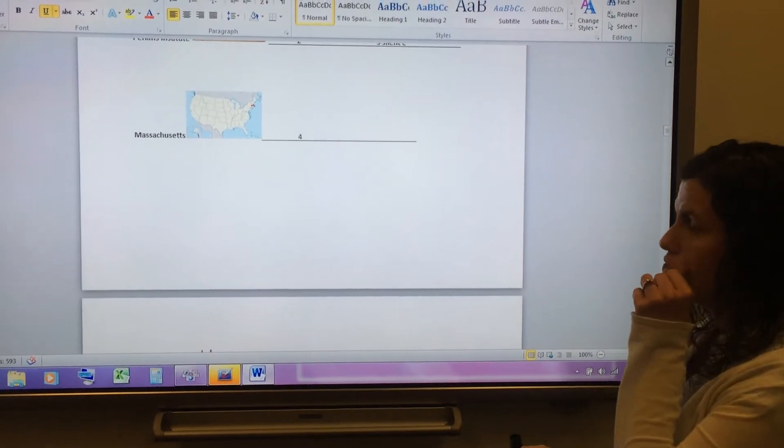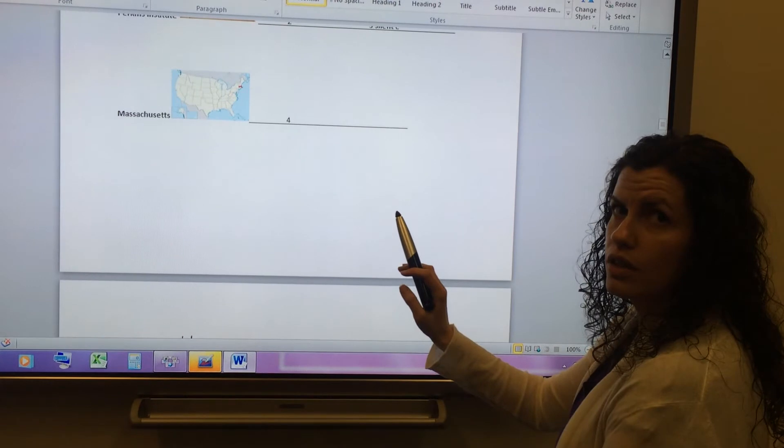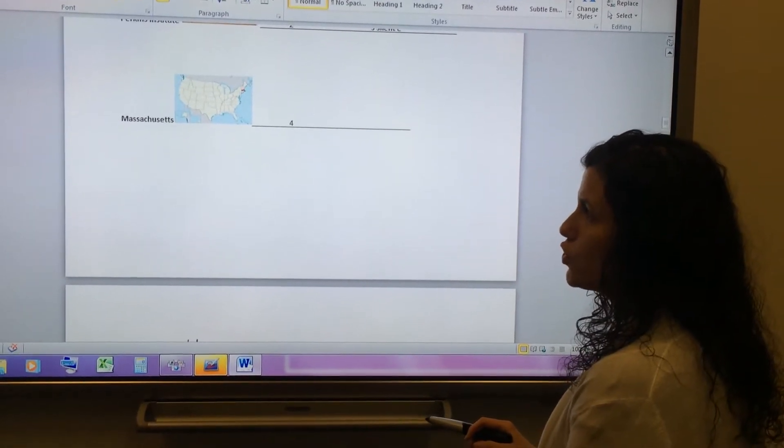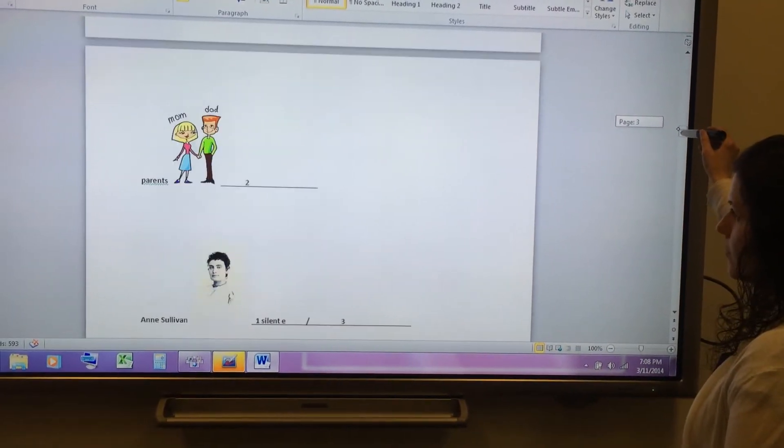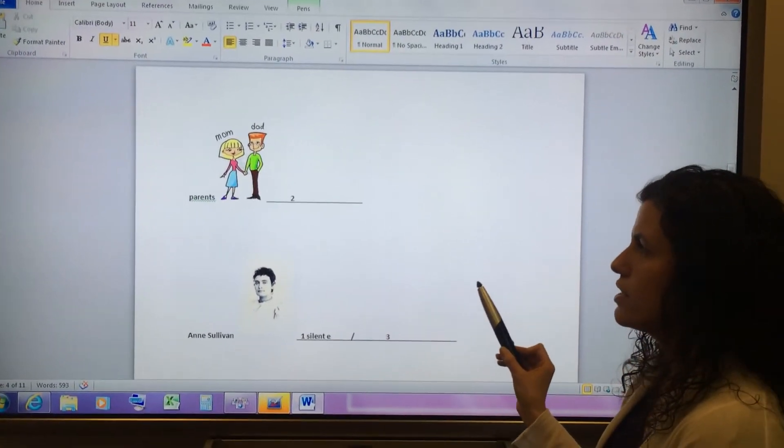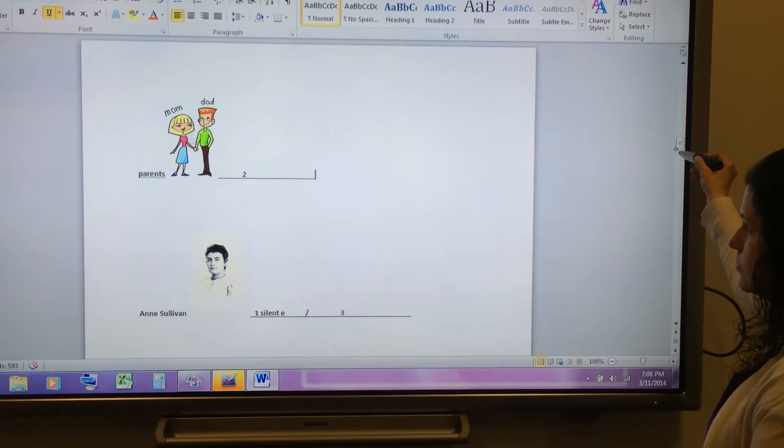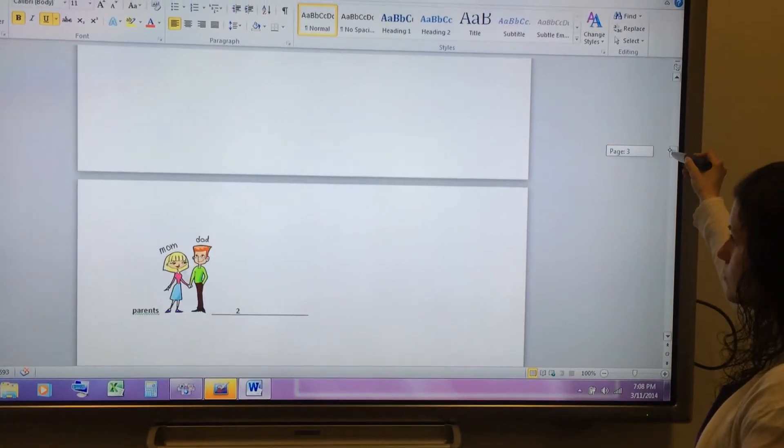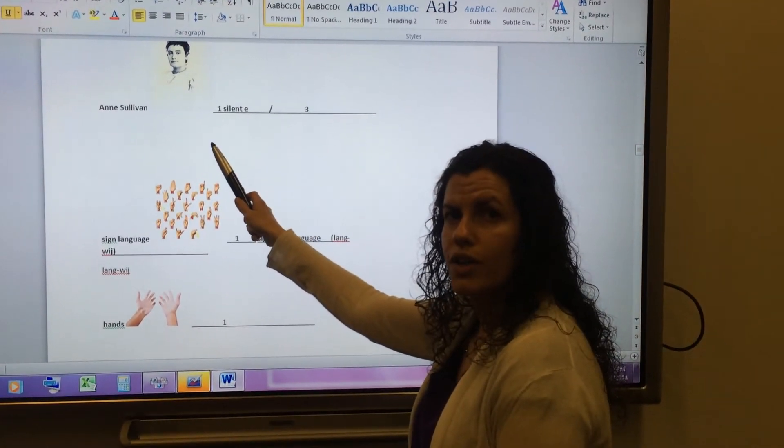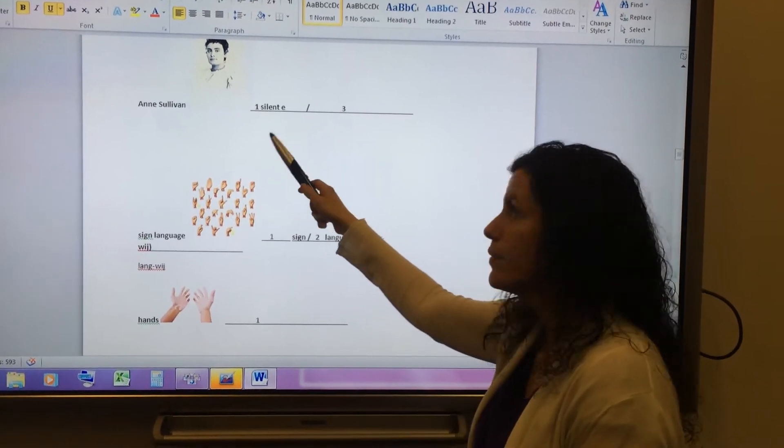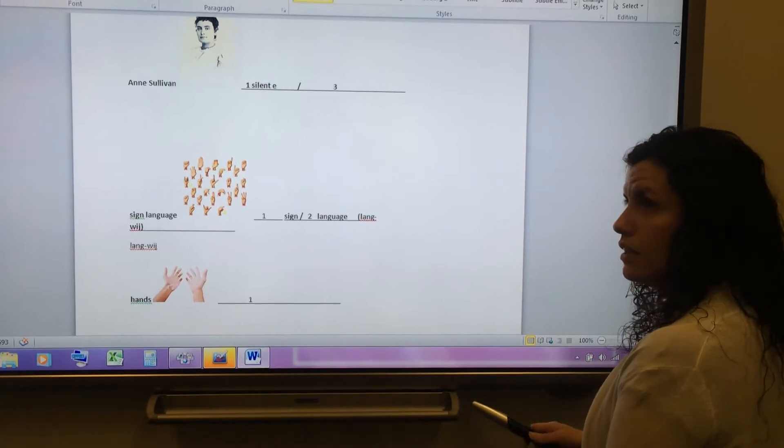Next is the state, Massachusetts. Kind of a difficult one to pronounce, even for English-speaking Americans. There are four sounds, four syllables. Massachusetts. Massachusetts. Here is the word parents. We have an A and an E. Parents. Two syllables. Here is a name, an American name. This woman's name is Ann. The first word, Ann, has one syllable and the E is silent. So I wrote one and silent E. Her last name has three syllables. There's three vowels and three sounds. Sullivan. Ann Sullivan.